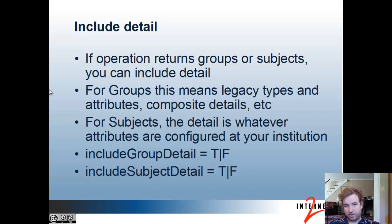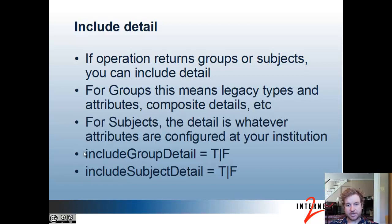For include detail, by default the web service only returns a minimal amount of information for things like groups or subjects. But in your request you can request more information. For groups, this means you can get information about legacy types and attributes — not the new attribute framework — and details about whether it's a composite, etc. For subjects, if you request subject details, whatever your Grouper administrator configured in grouperws.properties to be returned for subject detail will be returned. You do this with the switches include group detail (TF) and include subject detail (TF).